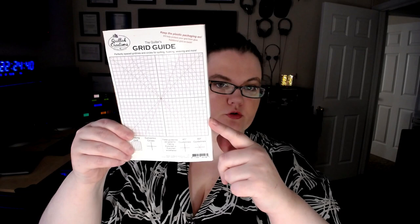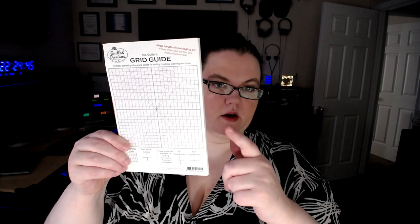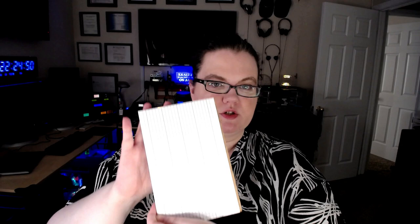So this one is from Quilt Creations and it's a grid guide. I'm not sure how well you can see that. There we go. And it has a circle grid on it. This would be great for making snowflakes or any kind of intricate design that needs a lot of symmetry. And it has a piece of cork in between it. And then on the back is just like a grid, like you used to use in math class for plotting points and things like that. And that I got off Quilt Creations.